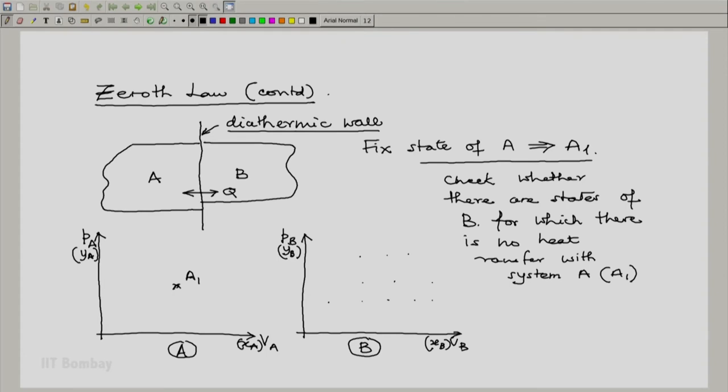And we may discover that there is one state here, let us call it B1, such that when A is in its state A1 and B is in its state B1, in spite of the separating partition being a diathermic wall, the heat transfer is zero.